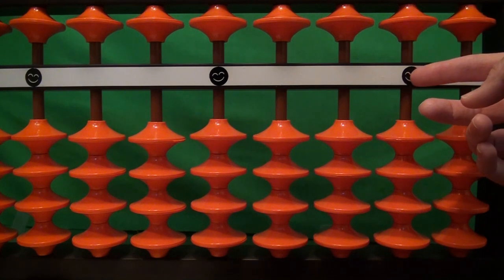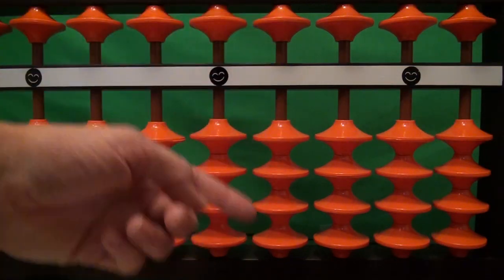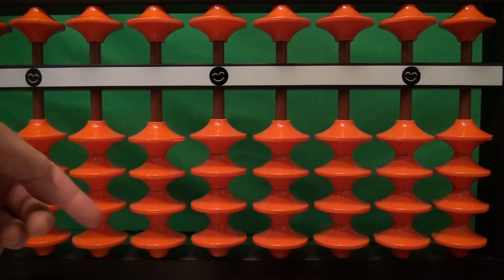With this abacus, these dots usually represent your starting point, so here's ones, tens, hundreds, thousands, ten thousands, and so on.